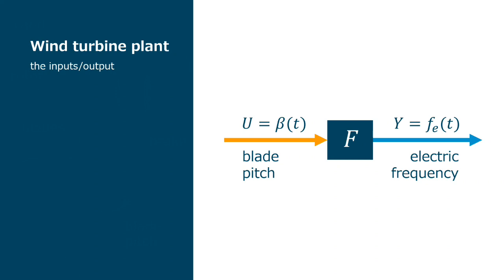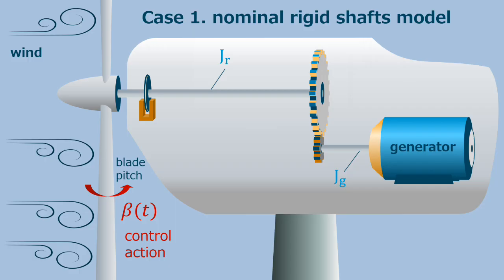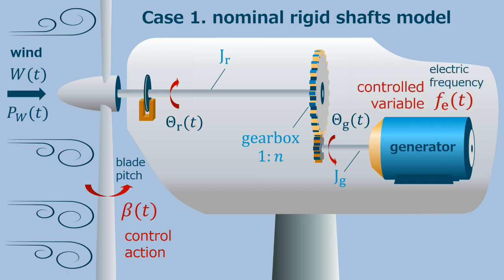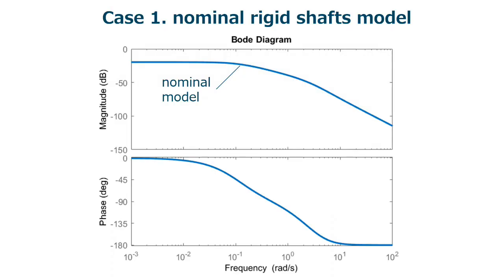We determine the transfer function of the plant, that is subject to the wind speed fluctuations disturbance. In the first approach, this case one, we consider the nominal rigid shafts model. So, from the wind power, to the rotation of the rotor, and through the gearbox, to the rotation of the generator. And we have the controlled variable, which is the electric frequency, and the power delivered to the grid. All this by changing the control action, which is the blade pitch. We get the transfer function, and we draw the frequency response.